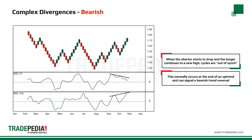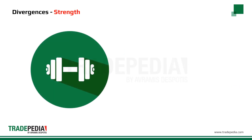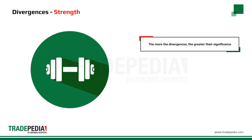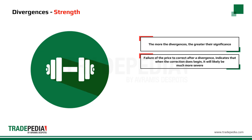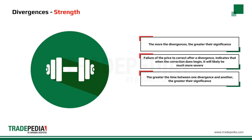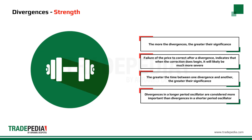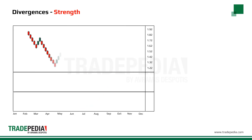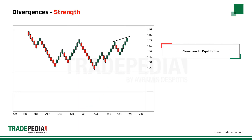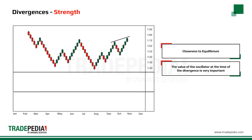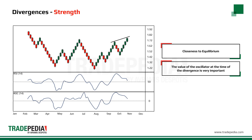One indication of the strength of divergences is the number of divergences — the more the divergences, the greater their significance. Failure of the price to correct after a divergence indicates that when the correction does begin, it will likely be much more severe. The time span between divergences is another indication of strength: the greater the time between one divergence and another, the greater their significance. Divergences in a longer period oscillator are considered more important than in a shorter period oscillator. A critical element is the closeness of the momentum oscillator to its equilibrium level. Note how the RSI and ROC are close to their equilibrium level at the time of the divergence.